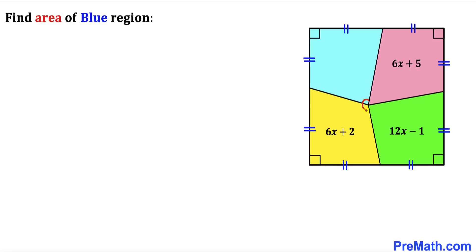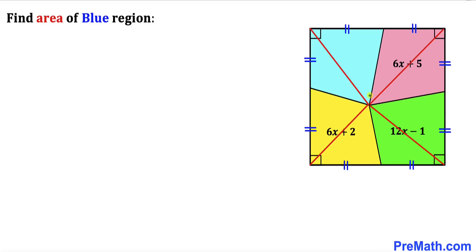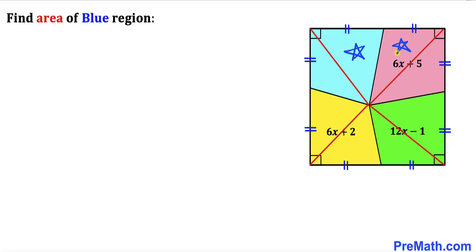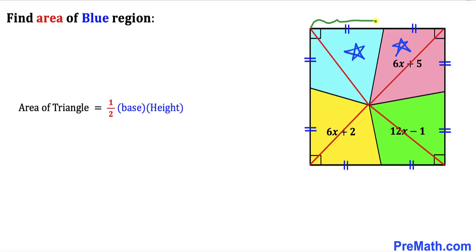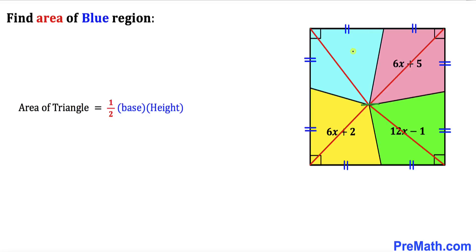We can see there is a point in common among these four regions. I've connected this common point with all four corner points of the square, giving us a set of triangles. Focusing on two of these triangles, we recall the area of a triangle formula: area equals one half times base times height. Both triangles share the same base and the same height.